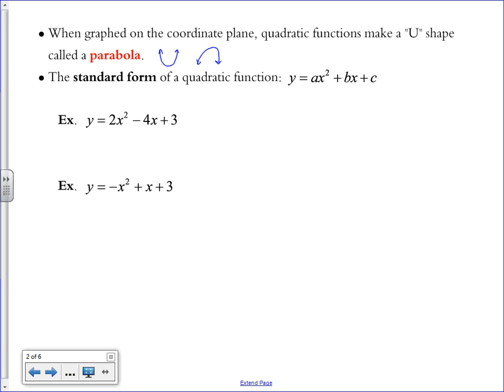The standard form of a quadratic function is y equals ax squared plus bx plus c. This is the first time we've seen a function with the x squared in it. The x squared is what makes this a quadratic function, and it's what's going to create that U shape on the graph.